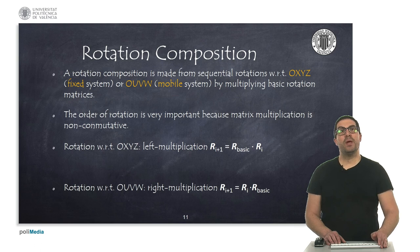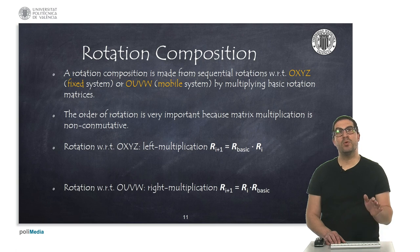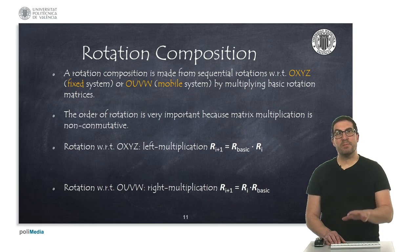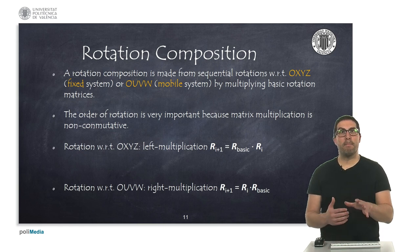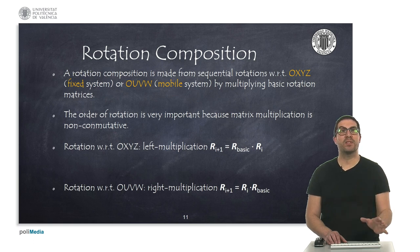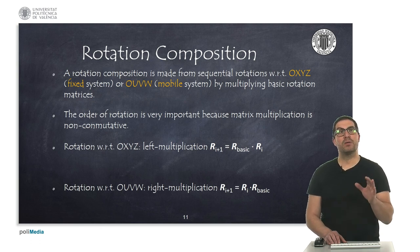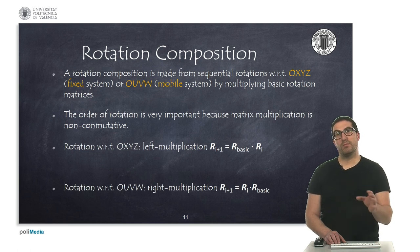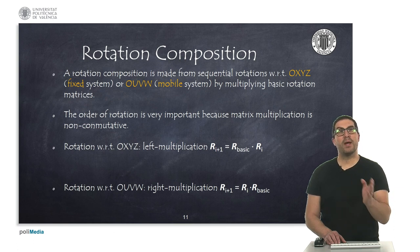If we want to make a composition of rotations, we can do that easily by sequentially performing multiplications of rotation matrices. Each of the basic rotations can be applied either with respect to the fixed axis or with respect to the mobile reference frame. Depending on which we choose, we need to either pre-multiply (left-side multiplication) or post-multiply (right-side multiplication), as shown in the slide.